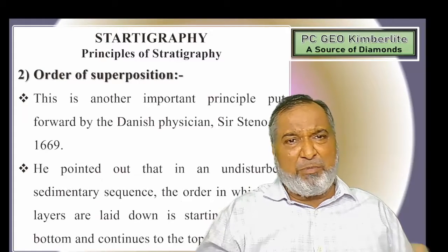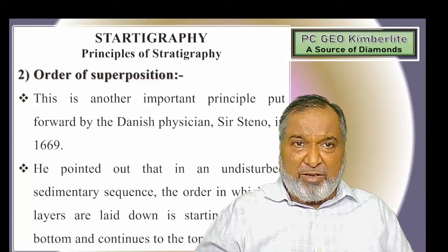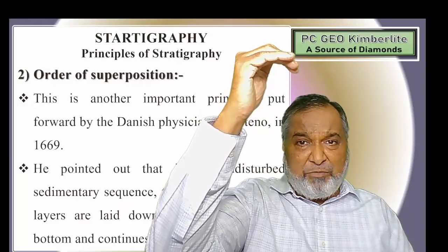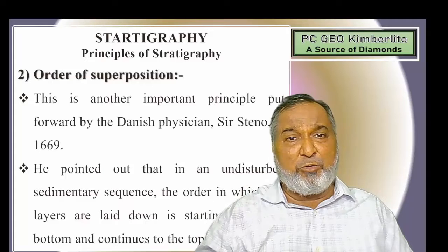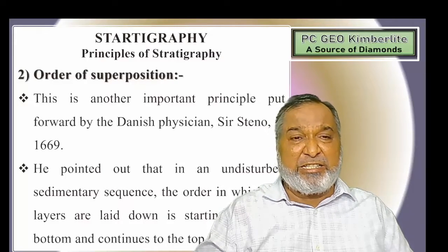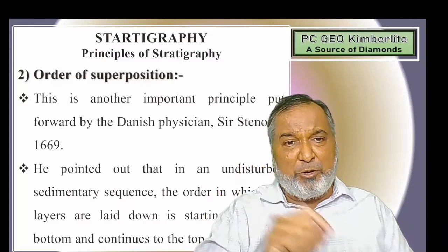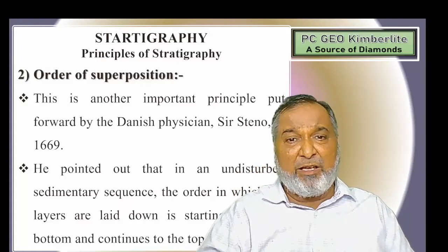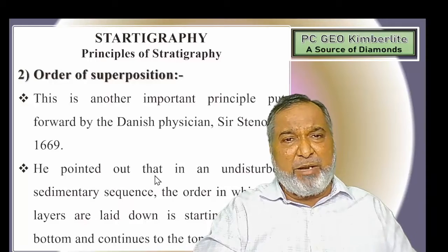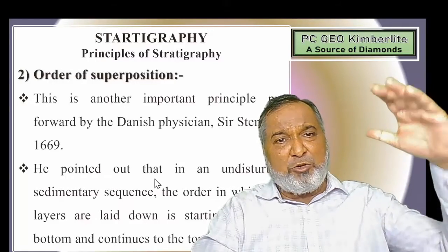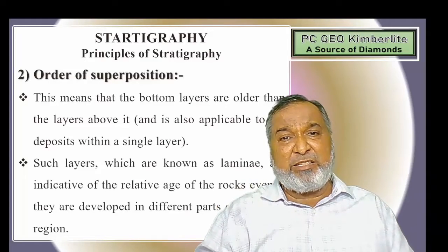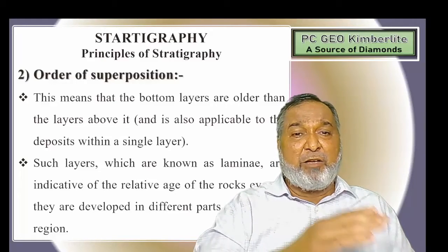According to the principle of uniformitarianism, rock structures and textures result from similar processes. Sedimentary features like ripple marks, graded bedding, and cross bedding are all results of transport of matter as it occurs even today. Order of Superposition: this principle was put forward by Danish physician Sir Steno in 1669. He pointed out that in an undisturbed sedimentary sequence, deposition starts from the bottom and continues to the top — whatever bed is deposited first is the oldest, and as you move upward, beds are progressively younger. The bottom layers are older than the layers above, and this is also applicable to deposits within a single layer, known as lamellae.